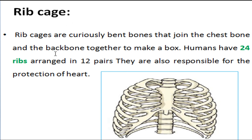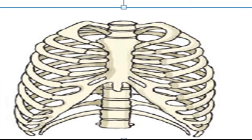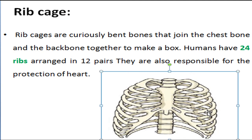Our next keyword is ribcage. Ribcages are curiously bent bones that join the chest bone and the backbone together to make a box-like structure. Humans have 24 ribs arranged in 12 pairs, as you can see in the figure. They are also responsible for the protection of the heart, which is protected inside the ribcage.